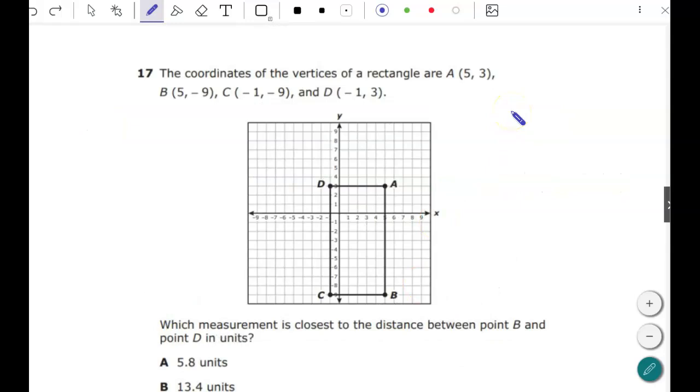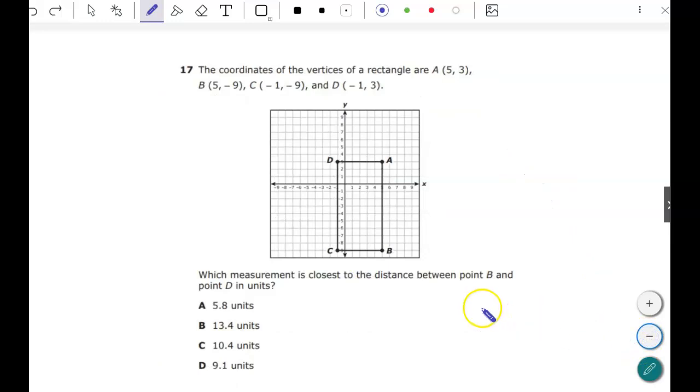17, the coordinates of the vertices of rectangle are given. We have to go through all those, but here's our rectangle A, B, C, D. Which measurement is closest to the distance between point B and D in units? So let's look at that. The question is between B and D. So that's the diagonal. It forms that right triangle. It doesn't matter which one you use. You want to go ahead and use the Pythagorean theorem because we now have the right triangle.